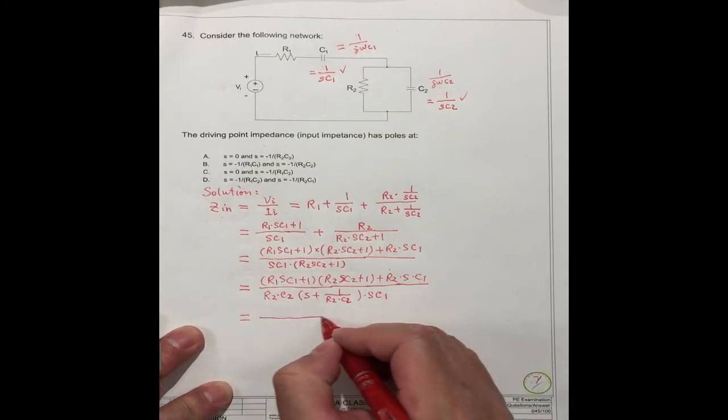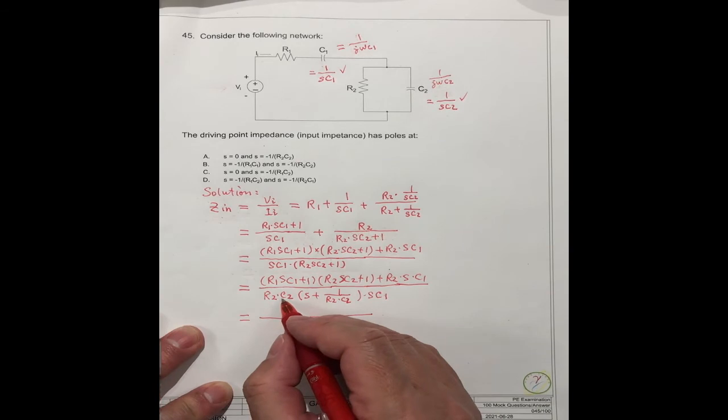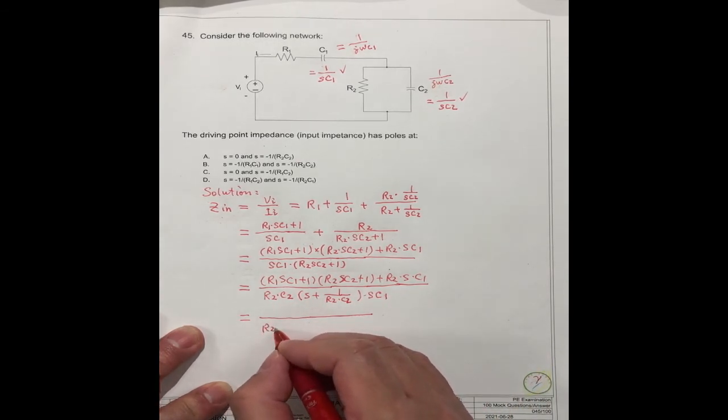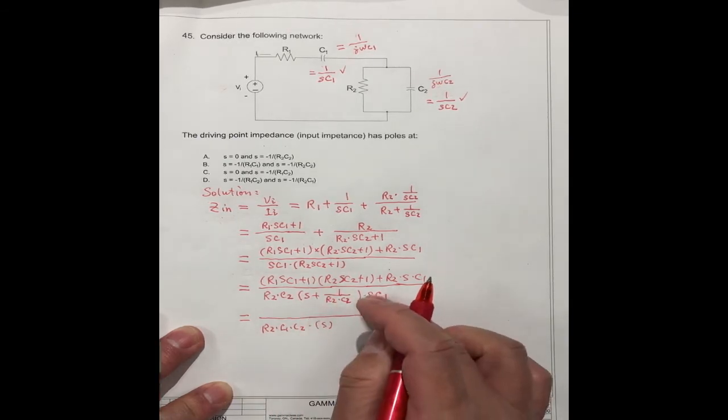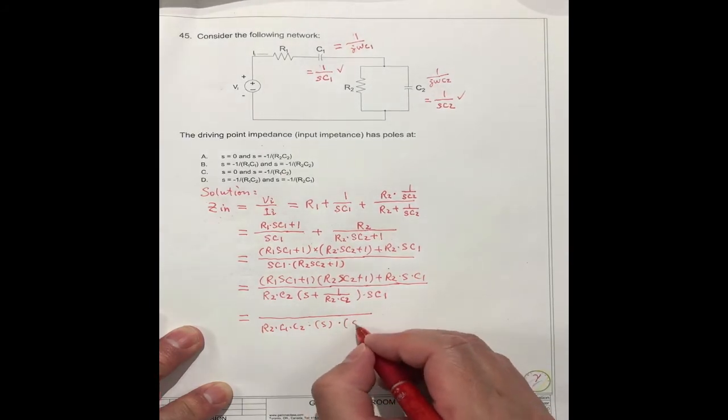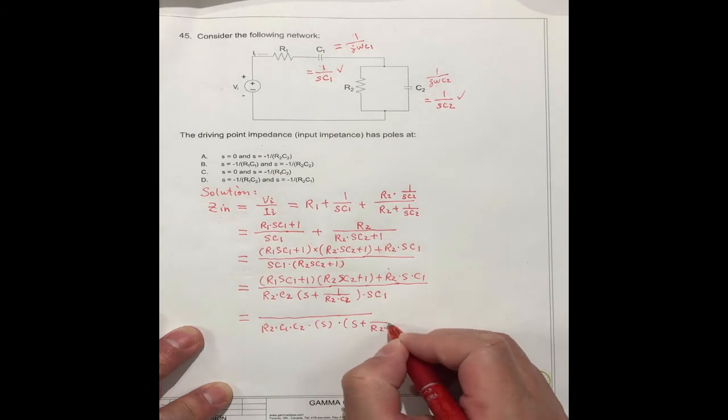Simplify. R2C1 will move together. R2C1C2 times S equals R2C2·S plus R2C2.